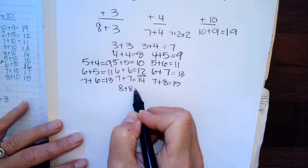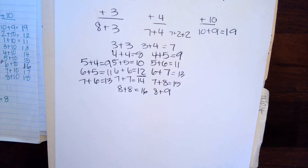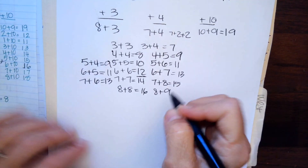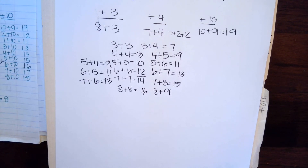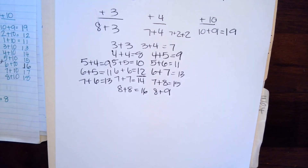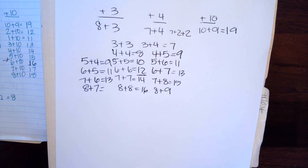Eight plus eight is sixteen. So what is eight plus nine? Eight plus eight is sixteen, so eight plus nine is one more. What's one more than sixteen? Seventeen. And what's one less than sixteen? Fifteen. You got it.